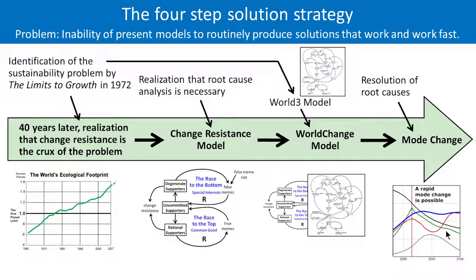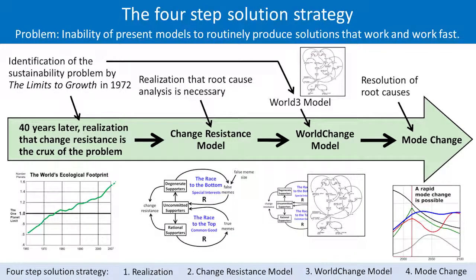To summarize, what we've done is redefine the problem to solve. The real problem is how to improve physical models of the sustainability problem until they routinely produce solutions that work. The four-step strategy shows how this can be done. By adding change resistance to integrated models like World 3, we can now find, test, and implement solutions that work in the model and the real world. This completes the introduction to the World Change video series. The four steps in the green arrow are covered in the next four videos. Goodbye for now and good luck in helping to solve the most important problem in the world.